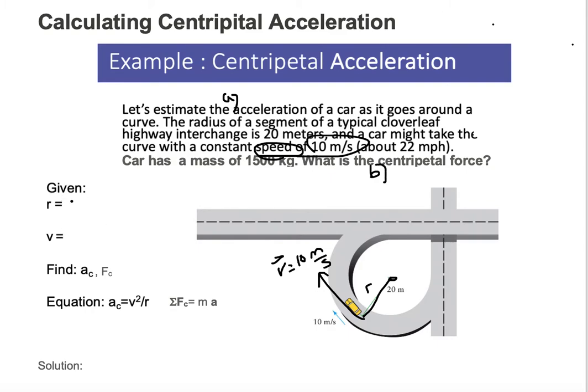We're given r is 20 meters. We're given v is 10 meters per second. And we're also given mass, and mass is 1,500 kilograms.